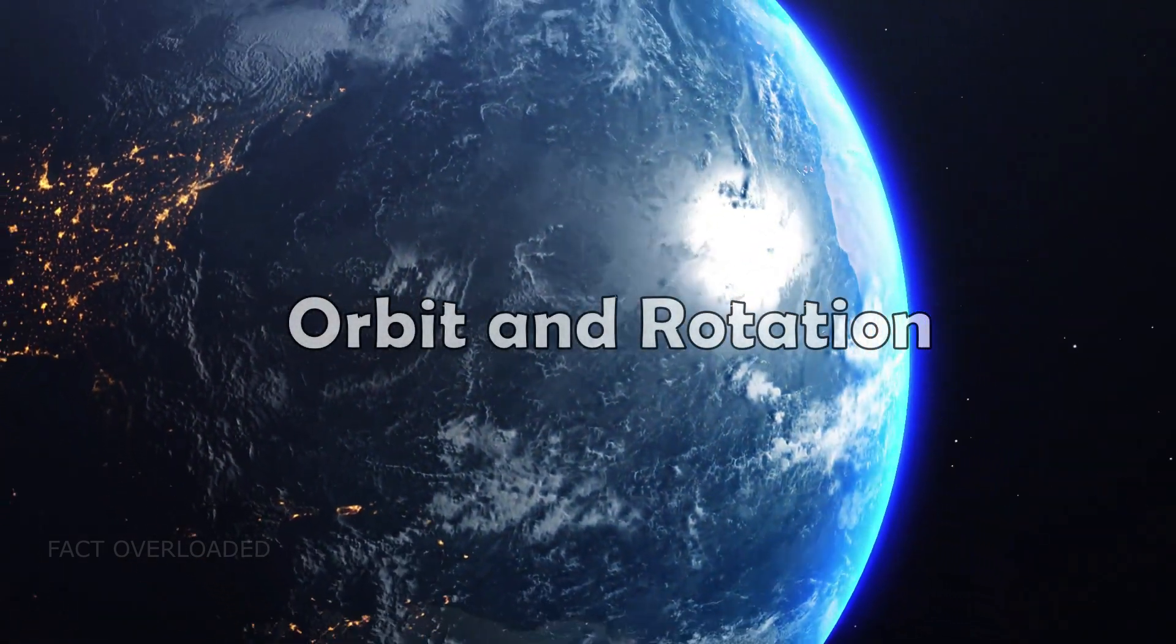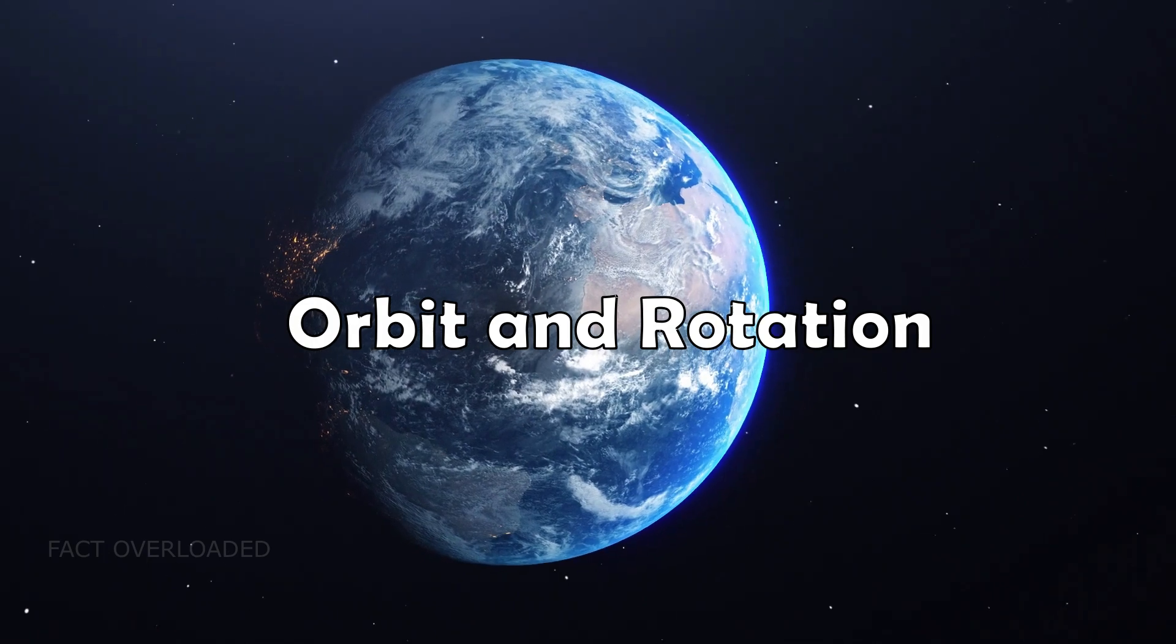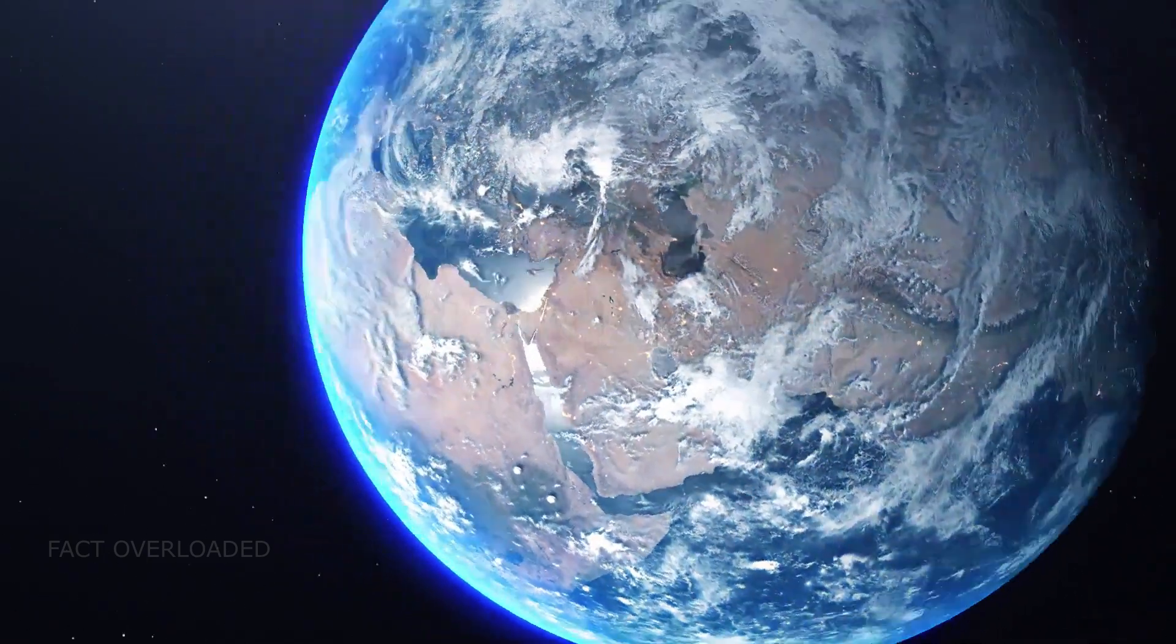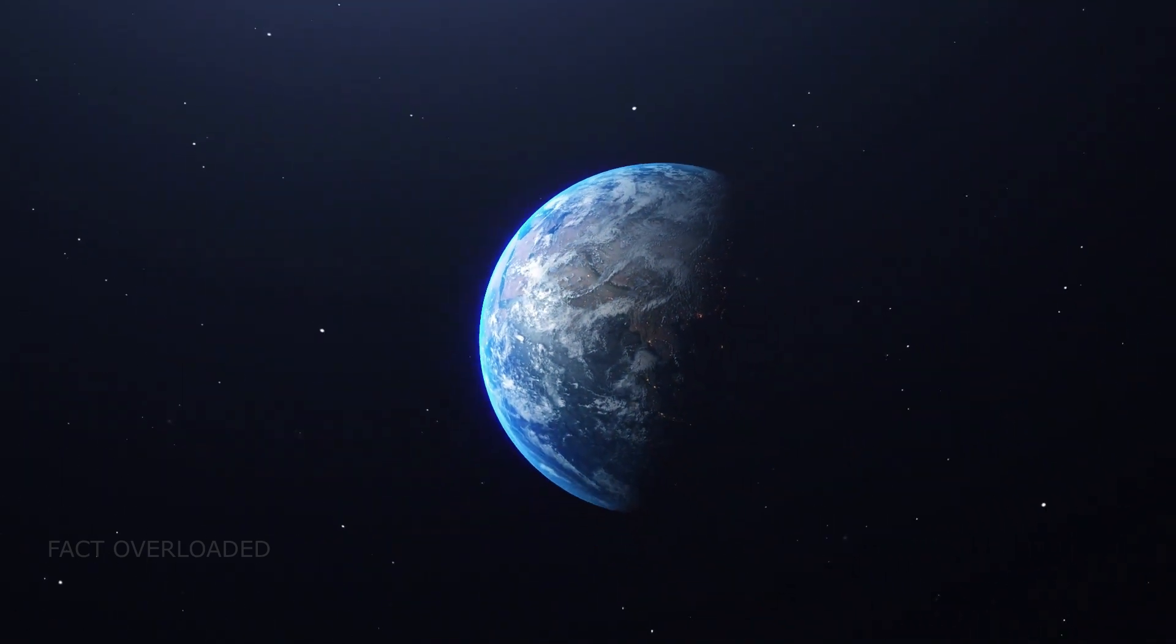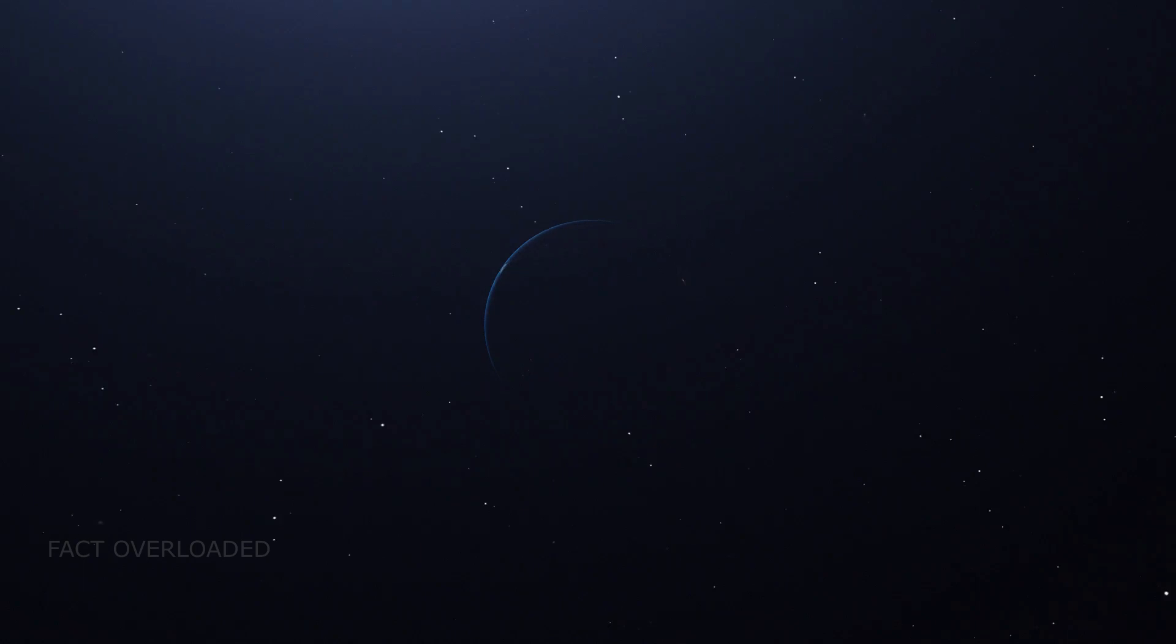Orbit and Rotation. The Earth makes a complete rotation on its axis once every 23.9 hours. It takes Earth 365.25 days to complete one trip around the sun, a year. In order for calendars to maintain their consistency with this orbit, every 4 years one day is added. This is called a leap day, as well as a leap year.